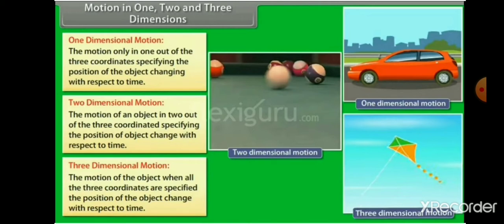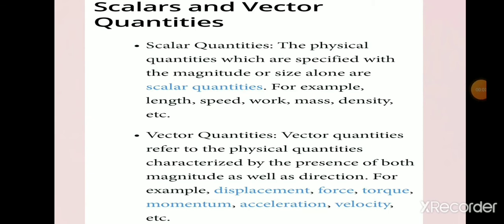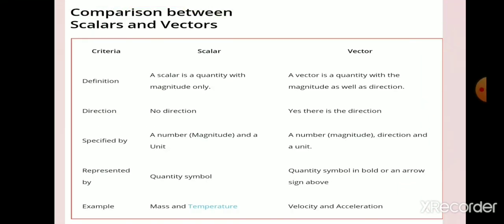In this chapter, firstly we will be dealing with the quantities scalars and vectors. We have already studied that physical quantities which are specified with magnitude or size alone are called scalar quantities. For example, length, speed, work, mass, density, etc. Vector quantities refer to the physical quantities which are characterized by the presence of both magnitude as well as direction. For example, displacement, force, torque, momentum, acceleration, velocity, etc.